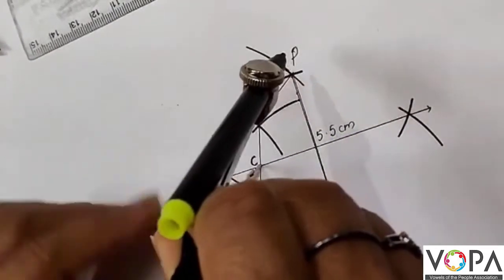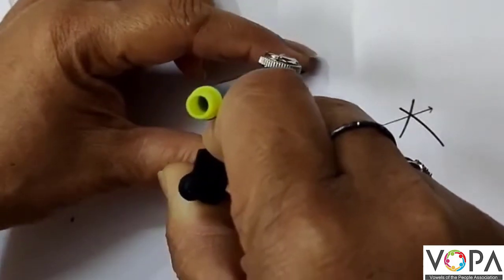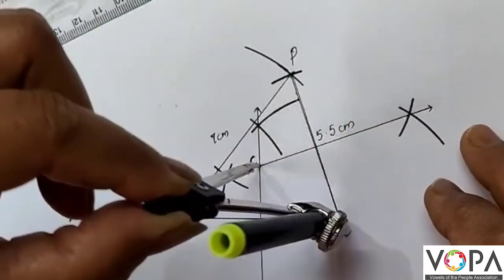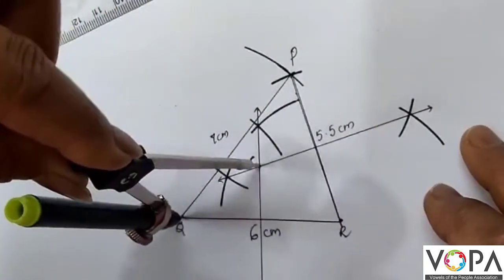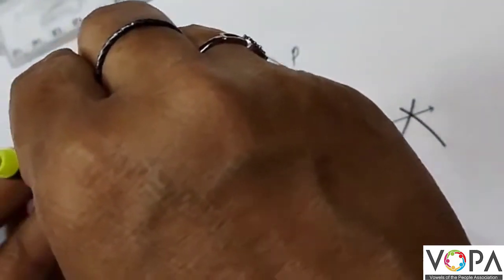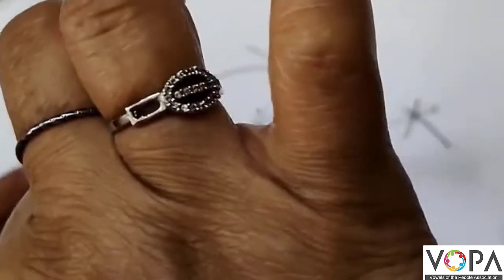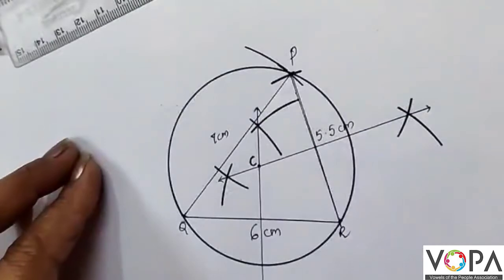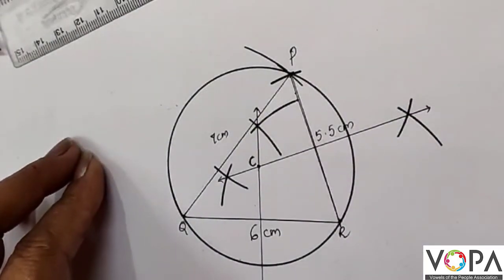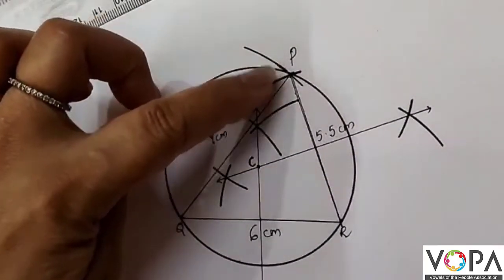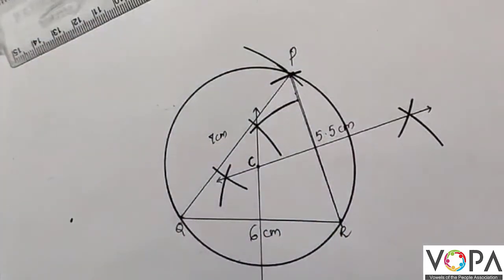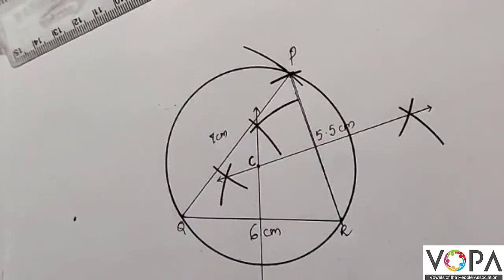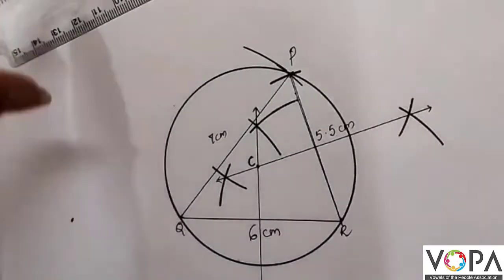The radius will be CP, or we can also take CR or CQ. These are the radii. So they should touch like this. Can you see an exact circle touching all three vertices? This is called a circumcircle. This is how you draw a circumcircle.